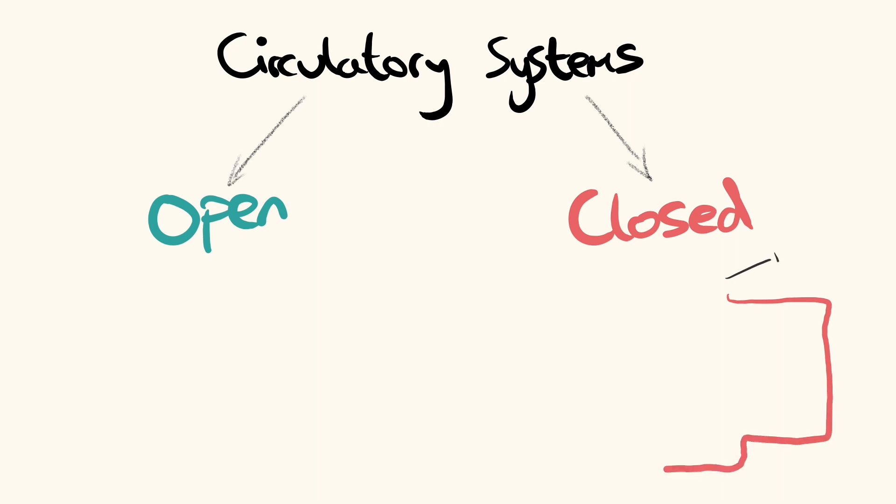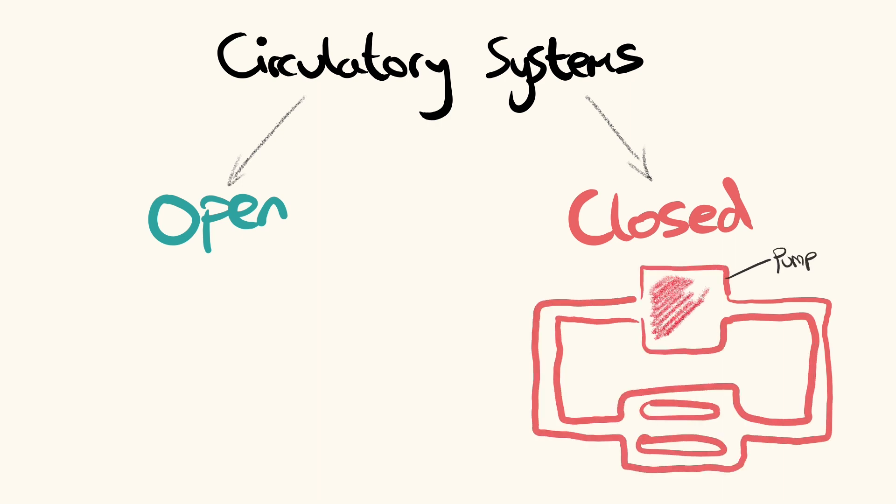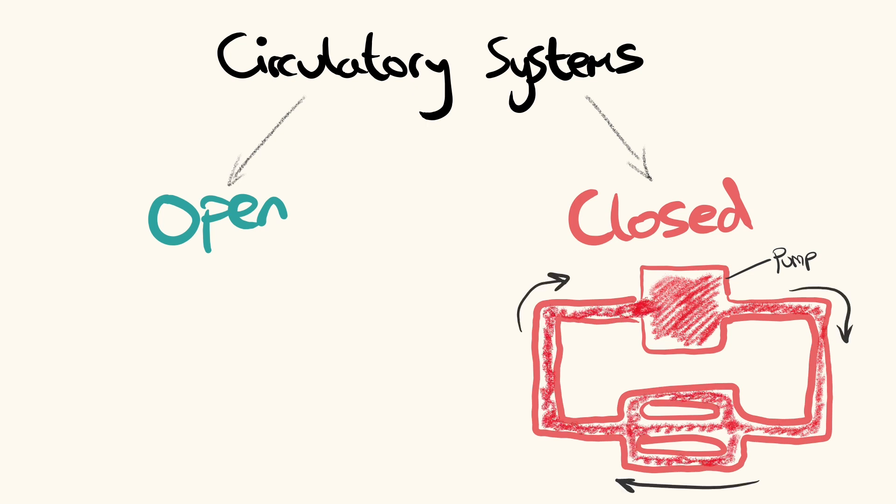Closed circulatory systems are made up of vessels which blood is pumped through. The blood never leaves the vessels, but small molecules diffuse in and out of small vessels such as capillaries.